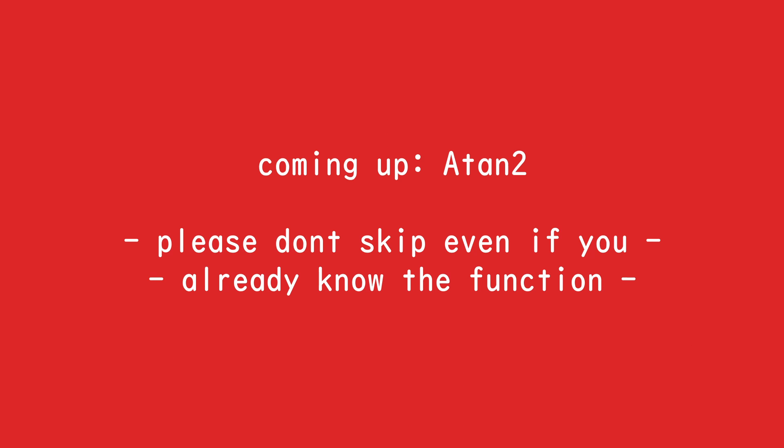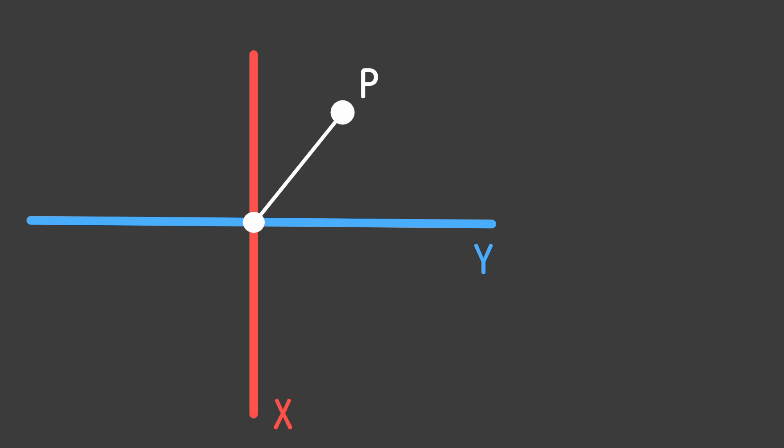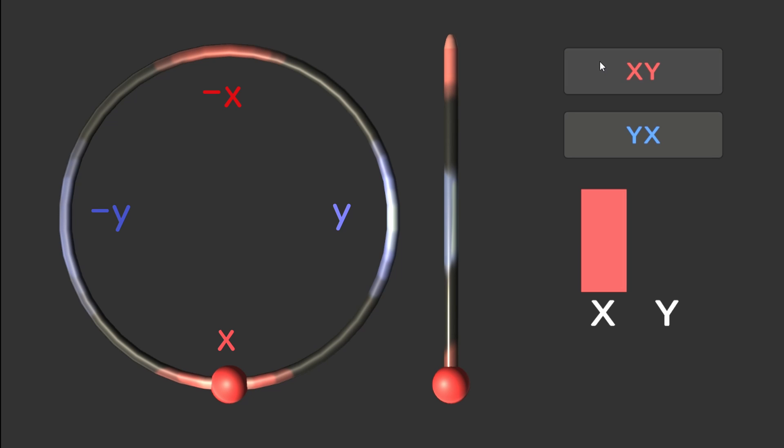Another function we need to understand before moving on is atan2. Here we have a point somewhere in the xy plane. Atan2 tells us the angle to one of the axes. From which axis depends on the order of inputted coordinates. Just know that we can know the angle to any axis. With that, we can rotate a point to it. In the context of value exchange, it tells us how much exchanging did happen, and if we want, we can reverse it and move all the value back to one of its axes.